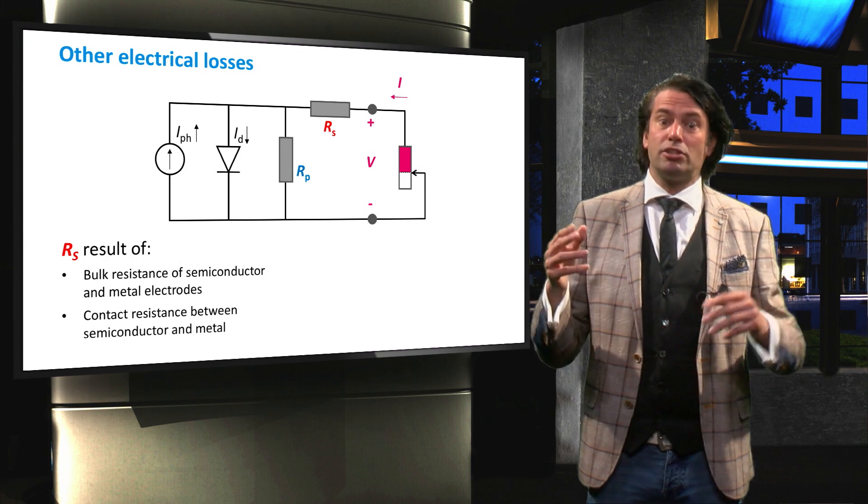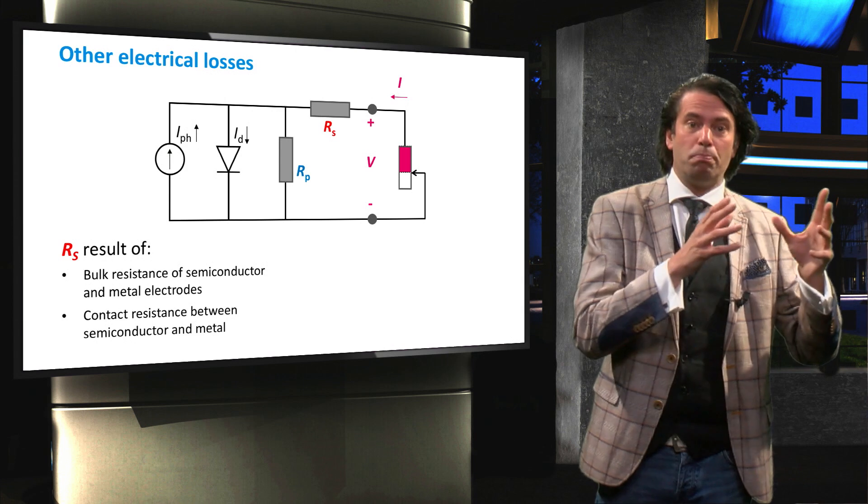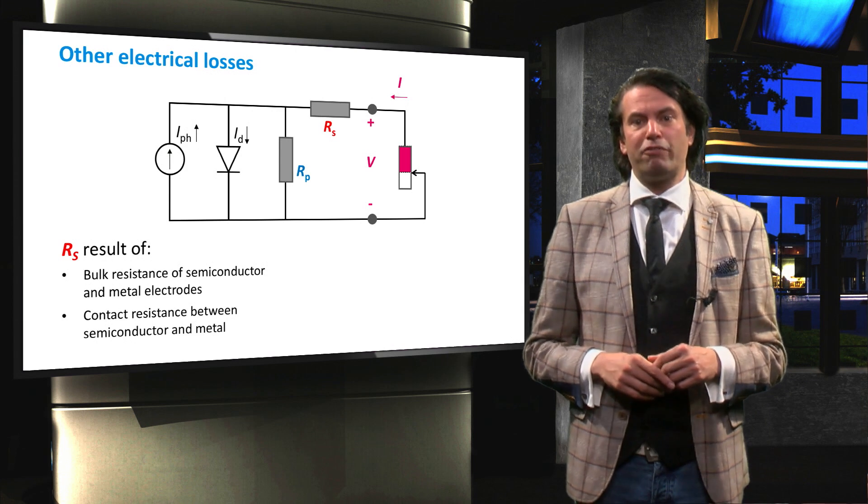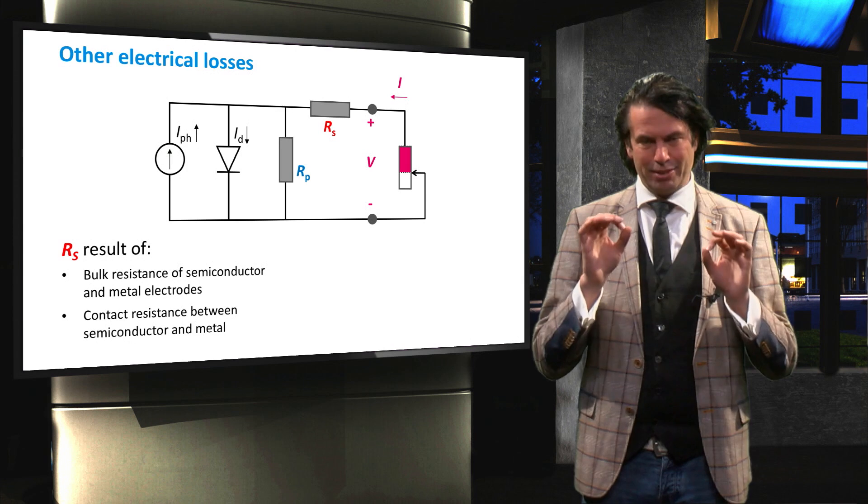As you can gather from the equivalent circuit diagram, increasing the series resistance decreases the maximum output power. The series resistance should therefore be as low as possible.